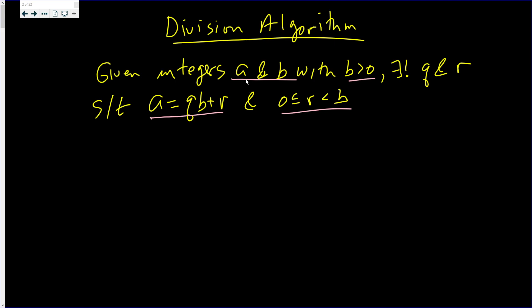We have the well-ordering principle, which says that if a set is bounded below and you find an element in it, then there's a smallest element. When you do long division, you want Q to be as large as possible, but that causes R to be smaller. R gets smaller as Q gets larger.